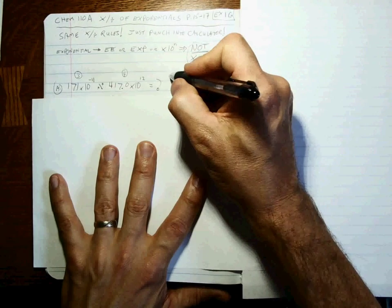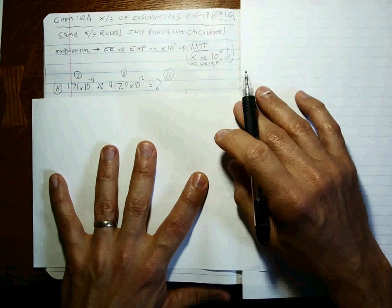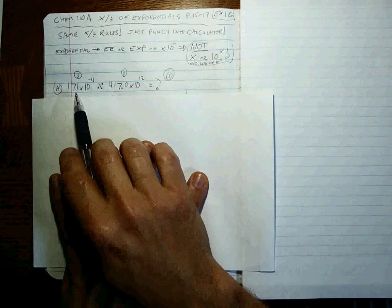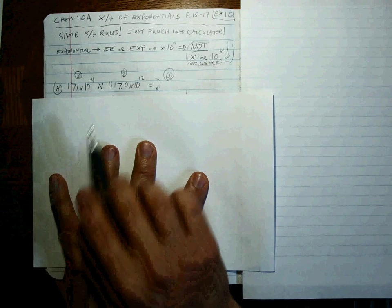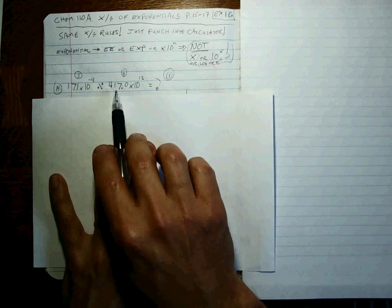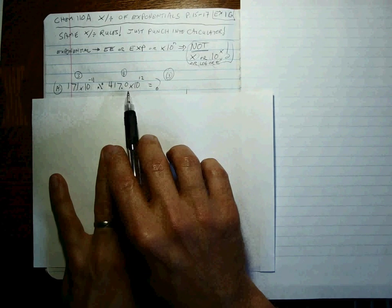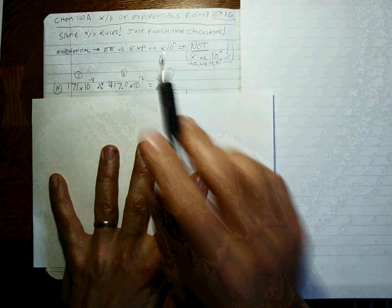So can you punch 171 times 10 to the minus 11th in your calculator correctly and divide by 417.0 times 10 to the 12th, hit equals, and then write the answer to three sig figs? That's your job.